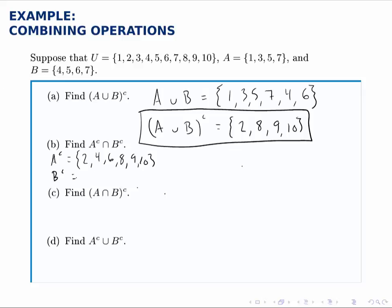For B complement, we do the same thing. Start with all the numbers from one to ten, the universe, and remove from those four, five, six, and seven. So we'll have one, two, three, take away four, five, six, and seven, and eight, nine, and ten. Now, finally, we take the intersection of these two, so we look for what elements appear in both of them at the same time. And we notice the two appears in both, as do the eight, nine, and ten.